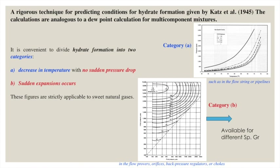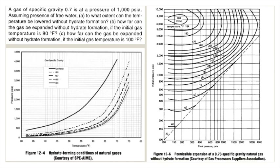Sudden expansion causes temperature to decrease, making hydrate formation unavoidable in certain cases. Now let's solve a problem using these charts. The question states: a gas of specific gravity 0.7 is at a pressure of 1000 psi, assuming the presence of free water. Question 1: to what extent can the temperature be lowered without hydrate formation?